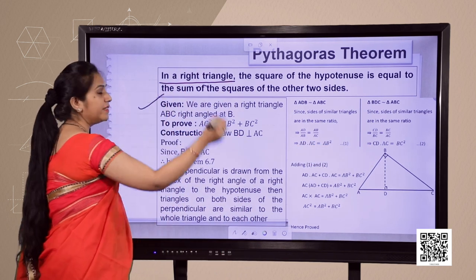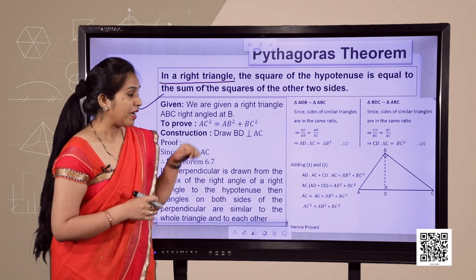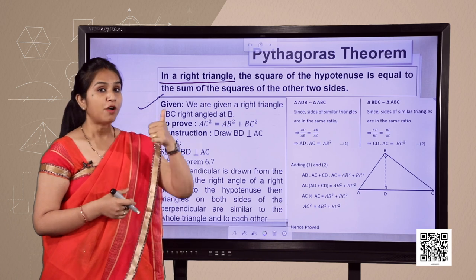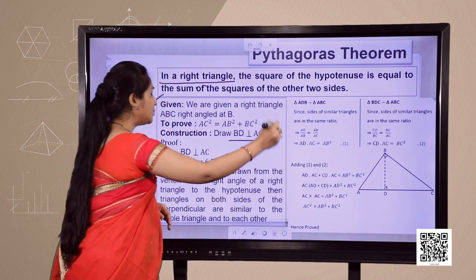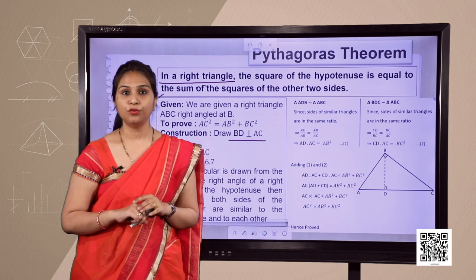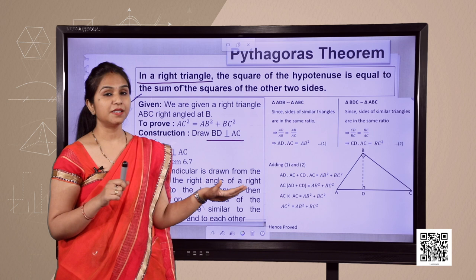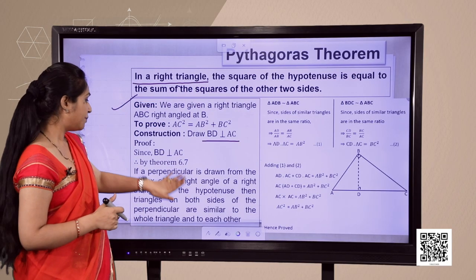We always start with the given things: triangle ABC is a right-angled triangle, right-angled at B. We have to prove AC² = AB² + BC². For construction, from vertex B we draw a perpendicular to the hypotenuse AC — draw BD perpendicular to AC. Since BD is perpendicular to AC, by Theorem 6.7, the perpendicular divides the triangle into two triangles, both similar to each other and to the whole triangle.